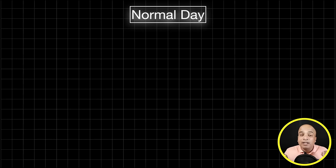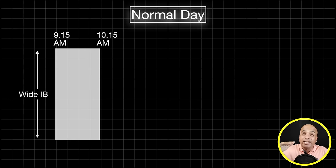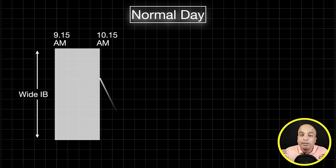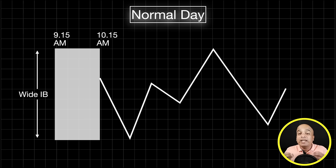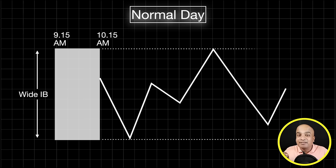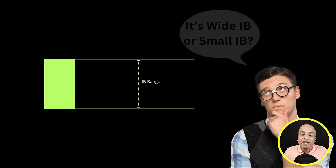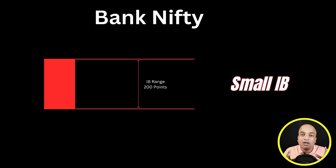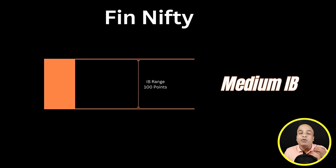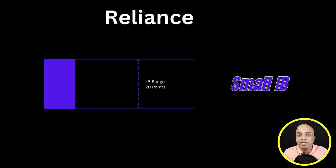A normal day will have a wide IB range, indicating that big players already established their position immediately after the market open. During a normal day, the price stays sideways within the IB range most of the time. Now you might wonder how to determine if the IB is wide or small. The IB range is subjective for every stock or index — you can't declare a fixed number of points as wide or small because every stock or index has a different price level and range.